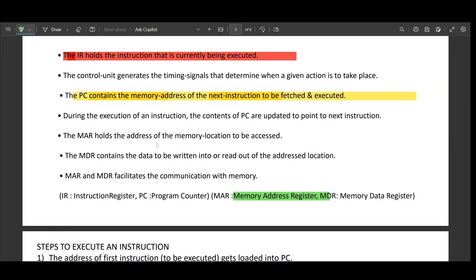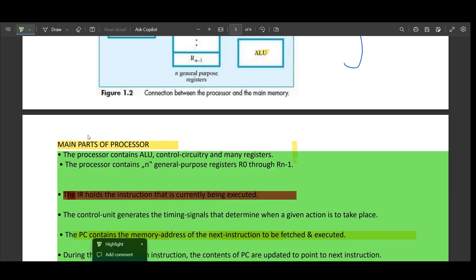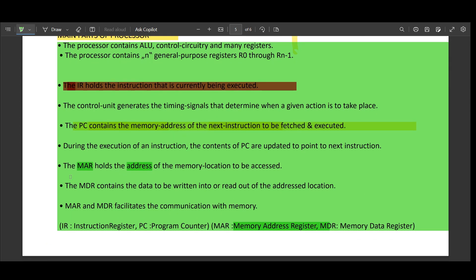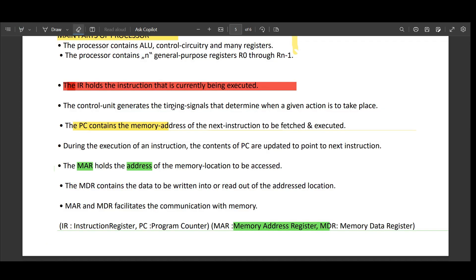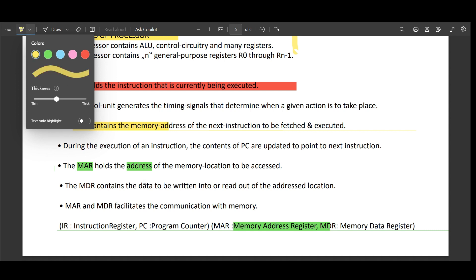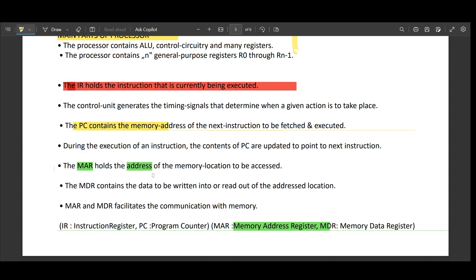So MAR will hold the address. Remember address is a key point. Here you have A. A comes as the address. So it will hold the address. Remember in that way. So it holds the address. Address of what it should hold? It should hold the address of memory. Simple.